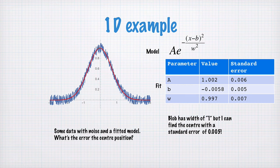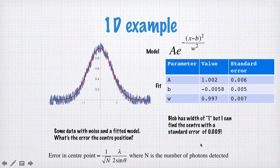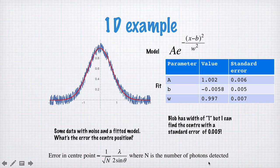The blob has a width of 1, but I can find the standard error much better than that. The error in the centre of the distribution, roughly for optical imaging, is going to be λ/sinθ — the Abbe diffraction limit — multiplied by 1/√n, where n is the number of photons detected. That's basically saying that if you detect more and more photons and build up a better idea of the shape of the curve, you can localise the centre increasingly well.